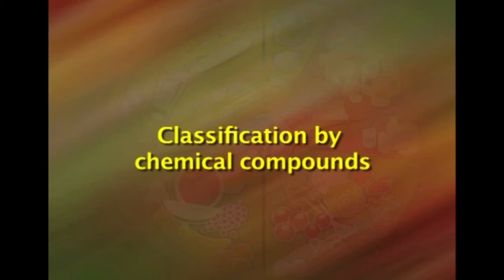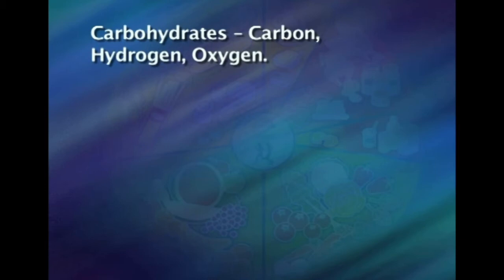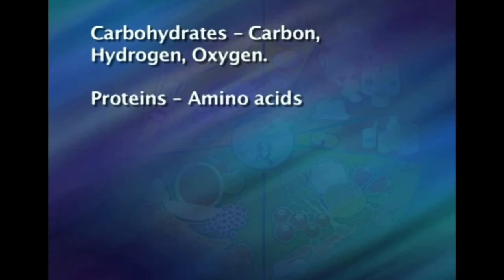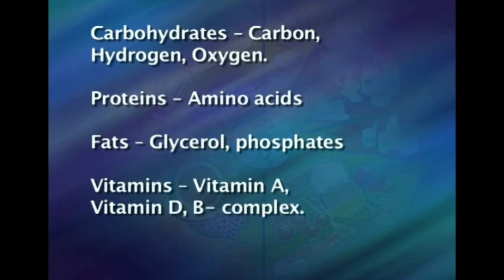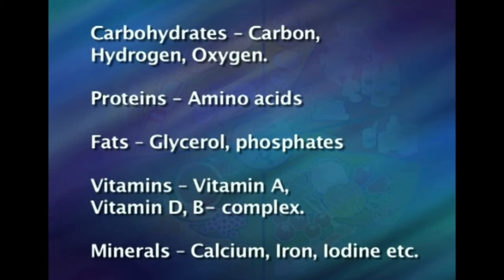The second classification of food is based on the chemical component present in the food. We have carbohydrates, which contain basically carbon, hydrogen, and oxygen. Then proteins, which contain amino acids. Fats, which contain glycerol and phosphates. Vitamins, which are classified into vitamin A, D, E, K, B complex, and vitamin C. And minerals, which include calcium, iron, phosphorus, chlorine, fluorine, and zinc.